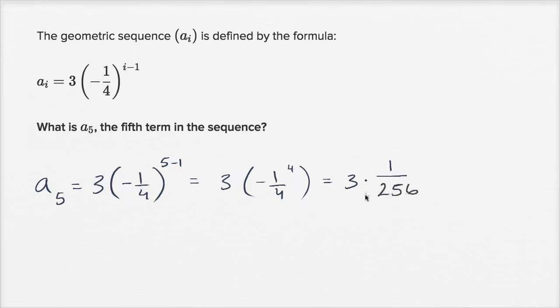And once again I know it's going to be positive because I'm multiplying a negative times itself four times, or I'm multiplying four negatives together, so that's going to give me a positive value.